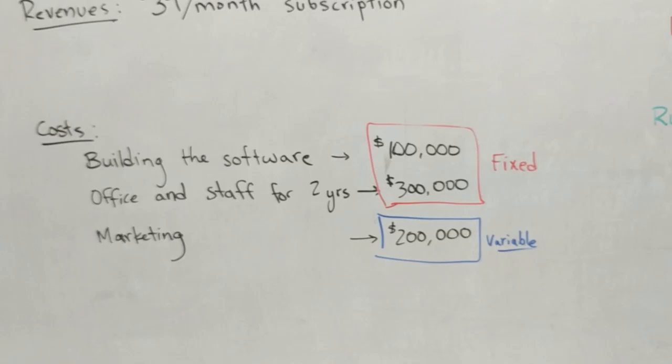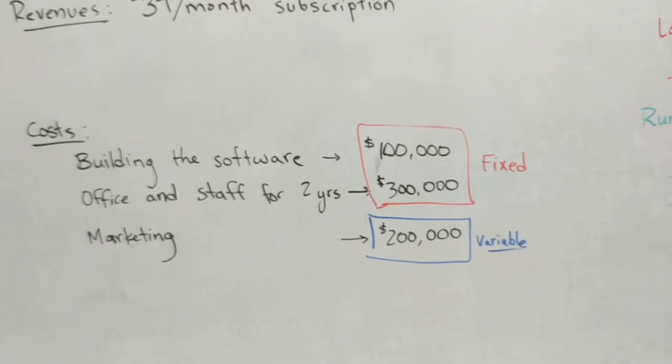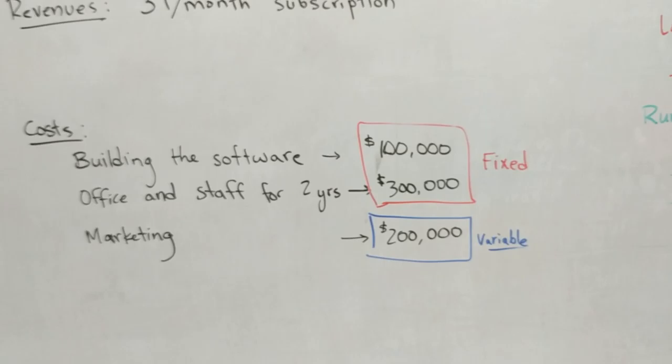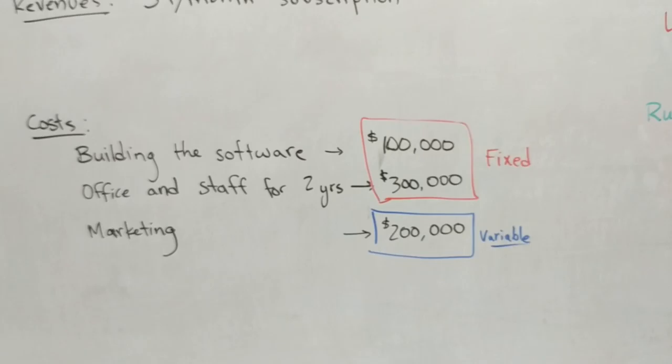Marketing is going to be variable. That's because it doesn't matter how many customers I have — building the software and the office and staff for two years are going to stay the same. Marketing is going to change depending on how much I do; hopefully the more marketing I do, the more customers I have, so we treat that as a variable cost.